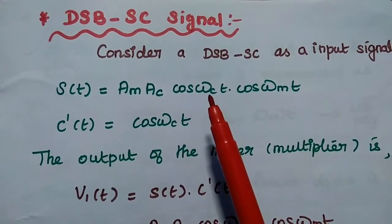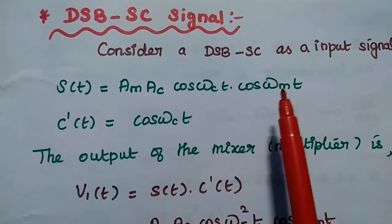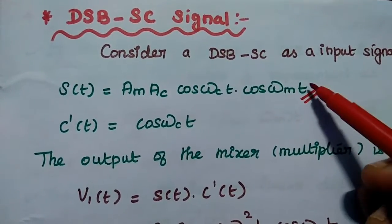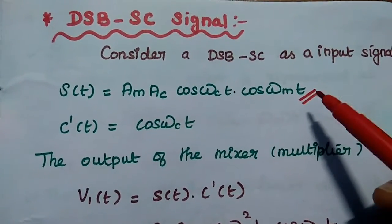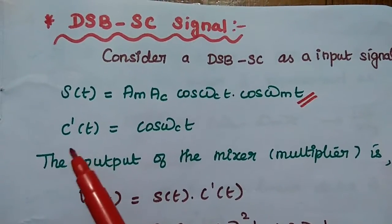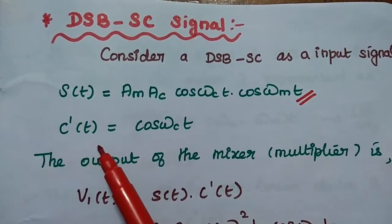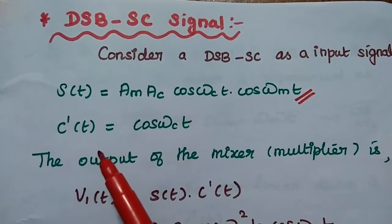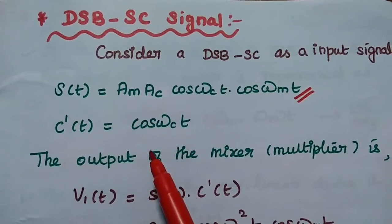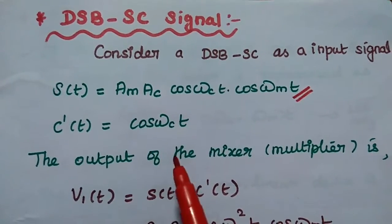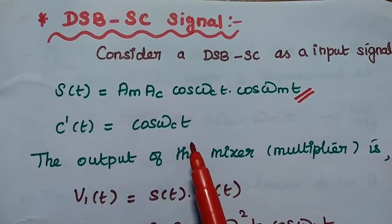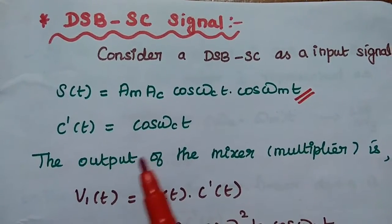ωC is the angular frequency of the carrier signal and ωM is for the modulating signal. We can directly use this amplitude modulated signal as input. C'(t) represents the carrier signal which is locally generated at the detector side, which is synchronized with the carrier signal at the transmitter side.